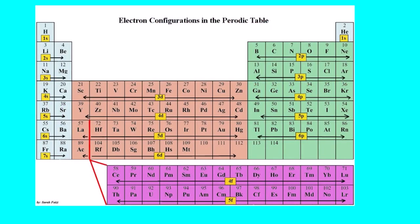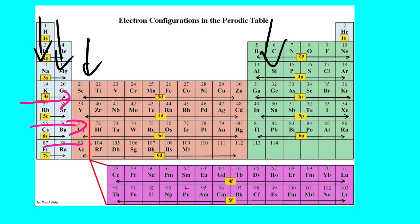Now that you understand the basics of the element, let us jump straight to electron configuration. We have this periodic table here — as you can see it's a bit simplified; it's not the normal one. The periodic table consists of groups, which are our columns, and periods, which are our rows.